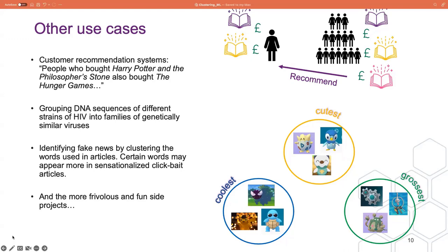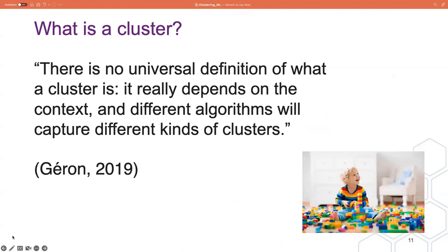There are a lot of use cases for clustering, but what actually is a cluster — what are these groups we're trying to search for? There's no universal definition of what a cluster is; it really depends on the context, and different algorithms will capture different kinds of clusters. These clusters or groups don't actually exist out there in the world — they exist based on how we interact with the data. Think about a box of Lego: there are many ways to divide it. We could split it into two clusters based on size — large pieces and small pieces — or five or six clusters by color, or even 50 clusters based on how pieces work for a certain kind of build. It all depends on the context and the criteria we specify.